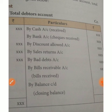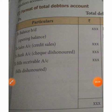To summarize the total debtors account format: the credit side includes cash receipts, bank receipts, discount allowed, sales return, bad debts, and bills receivable. The debit side includes opening balance, credit sales, check dishonored, and bills dishonored. When money comes in it goes to the credit side, and dishonored items go back to the debit side.